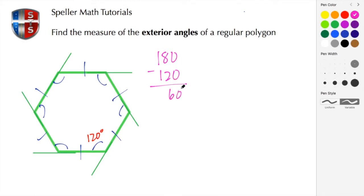Well, 180 subtract 120 is actually 60. So we found that the measure of each one of these exterior angles is 60 degrees.